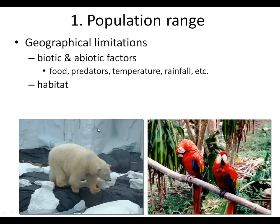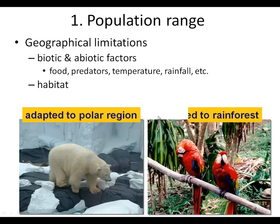Population range — geographic limitations due to biotic and abiotic factors. You can see a polar bear here — this is actually one in a zoo — trying to give it the environment of being cold, along with rock, but probably not as cold as what the polar bear would like. And then you can see these parrots — they like tropical environments, but there's actually a little bit of snow. Plants don't look too good; parrots probably not too happy. So, adapted for polar regions, adapted for tropical rainforest — when you actually move them into the wrong climate, it can change the range of the population.